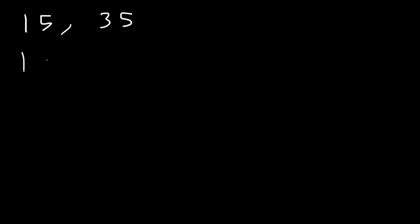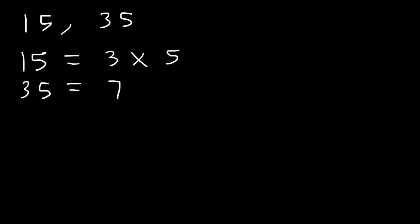Here's one method that you can use. First, write the prime factorization of each number. The prime factorization of 15 is simply 3 times 5. You want to break down 15 into prime numbers that multiply to 15. 35 is a composite number, and it can be broken down into 7 times 5.